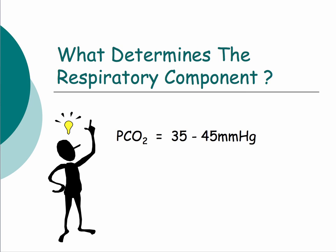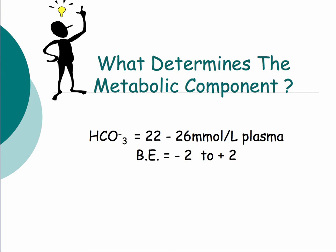The respiratory component of the arterial blood gas is the partial pressure of carbon dioxide in the arterial blood — the pCO2 — which should be between 35 and 45 millimeters of mercury. The metabolic component is dictated by the bicarbonate level, which should be 22 to 26 millimoles per liter, and the base excess, which is minus two to plus two. A positive base excess means excess base; a negative base excess — or base deficit — means less base. Base excess represents the amount of strong acid or base needed to return the pH of a liter of blood to 7.4.